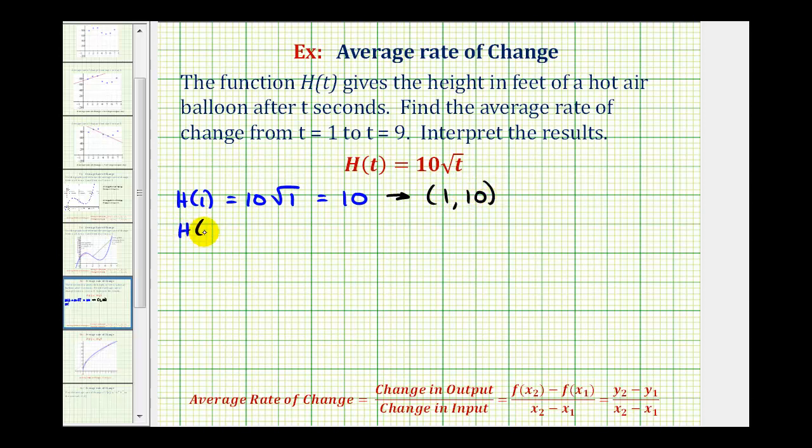Now we'll find H(9). That would be 10 times the square root of 9. The square root of 9 is equal to 3, so this is equal to 30. So H(9) equals 30, which again corresponds to the point where the x-coordinate is 9 and the y-coordinate is 30.